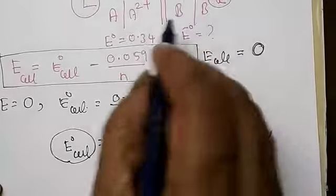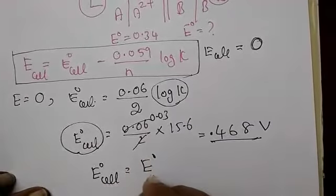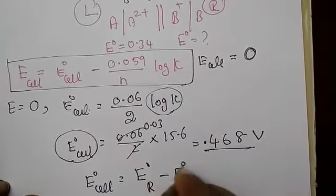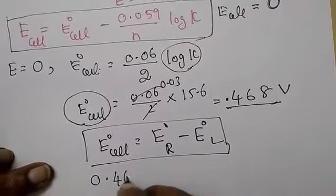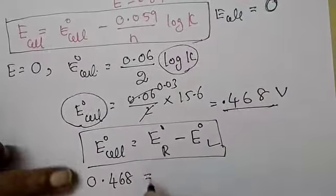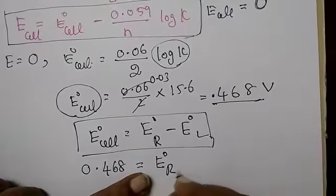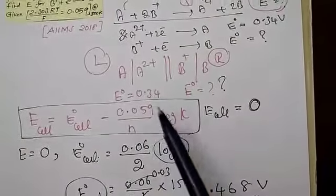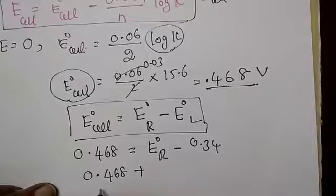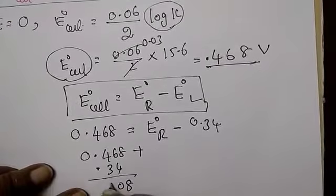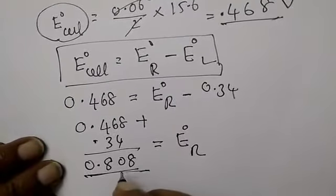What is the formula from here? The overall E°_cell formula is E°_cell = E°_right − E°_left. E°_cell available is 0.468 V. So: 0.468 = E°_right − E°_left. The right side is the unknown and the left side E° is given as 0.34. Bringing 0.34 to the other side: E°_right = 0.468 + 0.34. Adding these gives 0.808 V as the answer — that is E°_right.